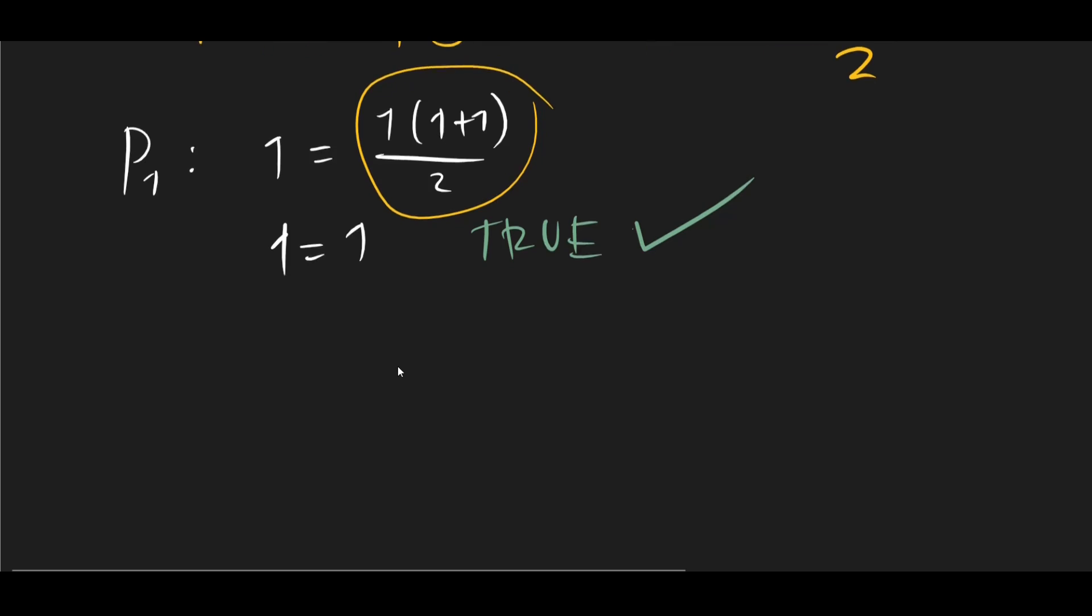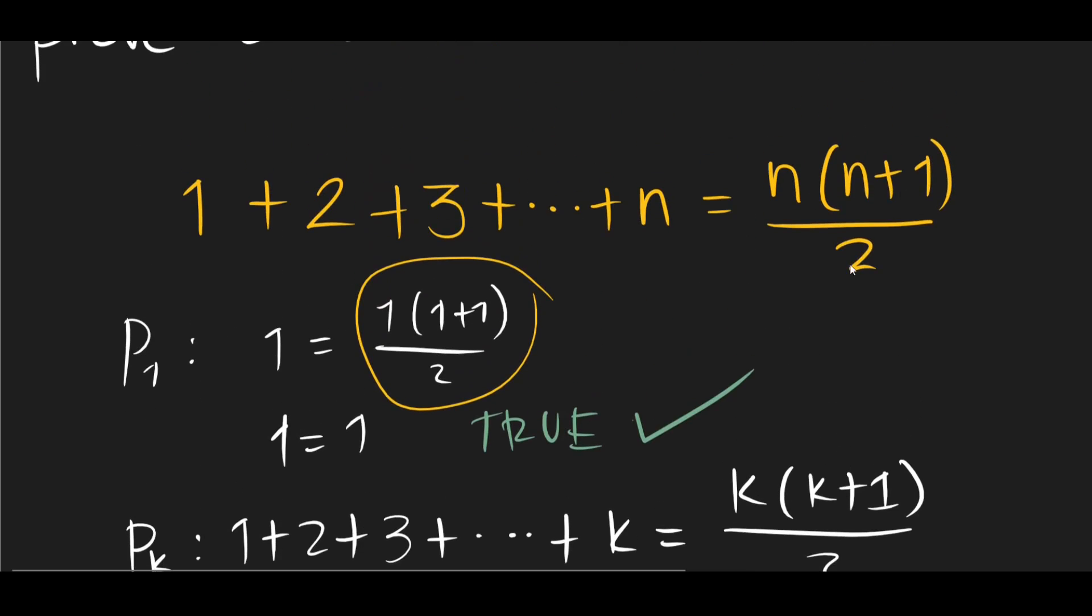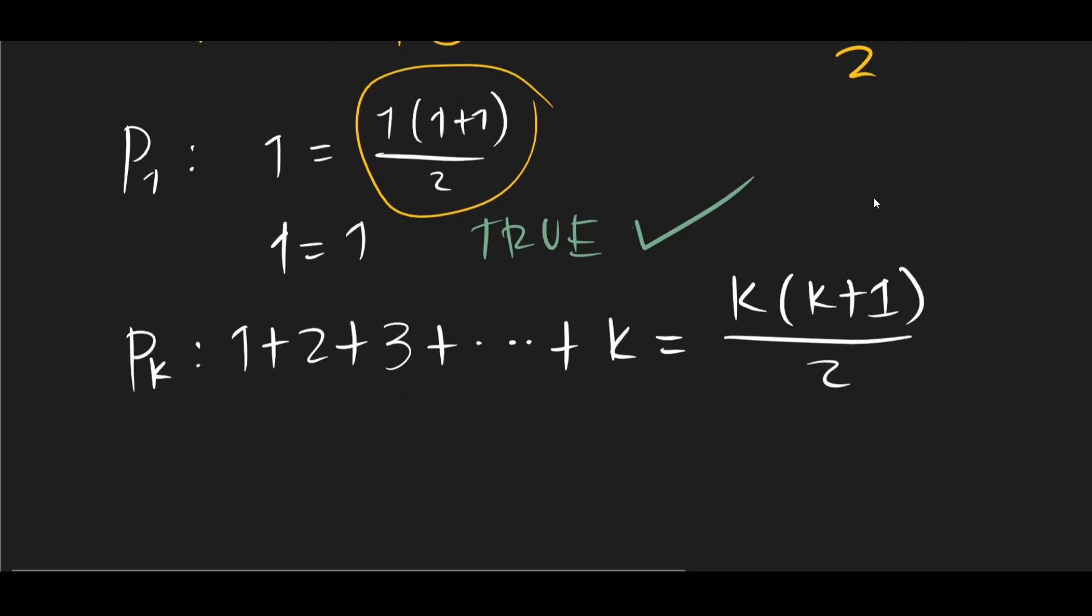So let's write Pk first. Pk is 1 plus 2 plus 3 plus k equals k times k plus 1 all over 2. Okay, so we've just basically replaced n here with k.